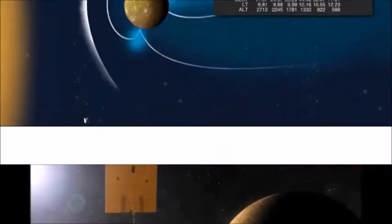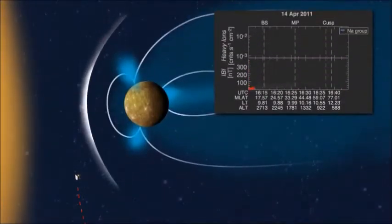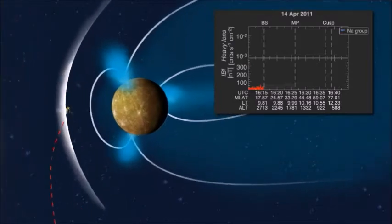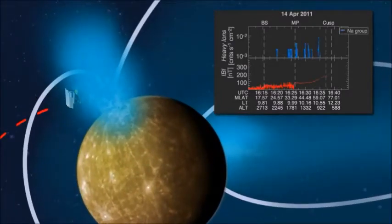The origin of the magnetic field can be explained by dynamo theory. Because the magnetic field is strong enough near the bow shock, it slows down the solar wind, which induces a magnetosphere.